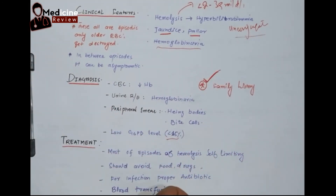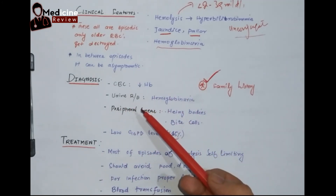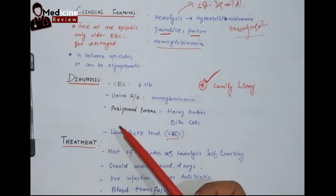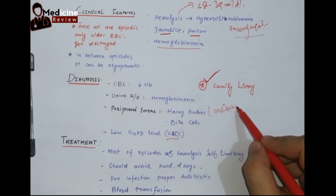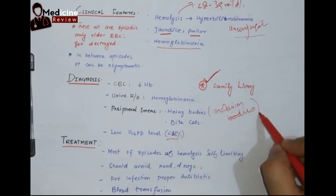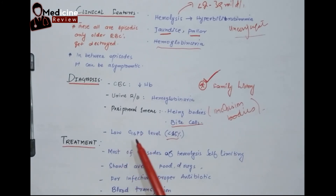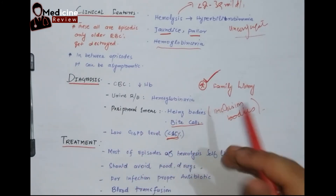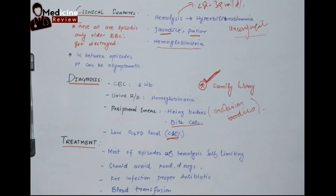For diagnosis, like other hemolytic anemias, there will be decreased RBC. On urine routine examination there will be hemoglobinuria. On peripheral smear, as discussed, there will be Heinz bodies — which are insoluble inclusion bodies — and when these pass through macrophages they become bite cells. There will also be a low G6PD level, less than 15%. For diagnosis, remember that family history is very important. In every G6PD patient there will be a family history, and affected family members will be male, not female.